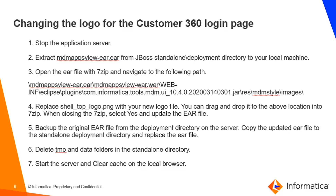First, we will discuss the steps to change the logo for the C360 login page. Stop the application server. Extract mdmappsview.ear from the JBoss standalone deployments directory to your local machine. Open the EAR file with 7-zip and navigate to the following path. Replace shell_top_logo.png with your new logo file. You can drag and drop it to the above location in 7-zip. When closing 7-zip, select yes and update the EAR file.